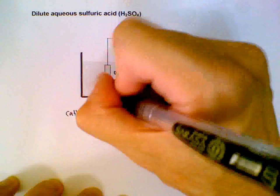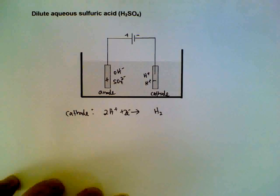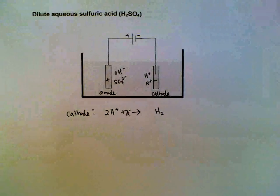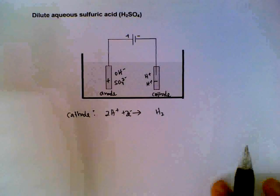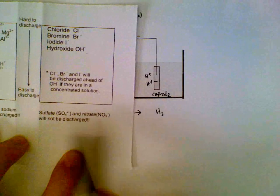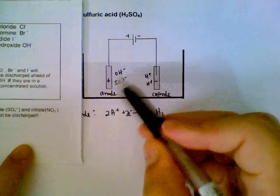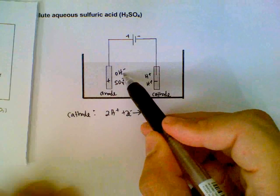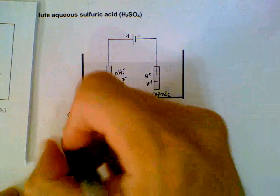At the anode, between sulfates and hydroxides, it will be useful to remember that sulfates or nitrates for that matter will not be discharged. So it's your hydroxides that will be discharged - they will be oxidized.